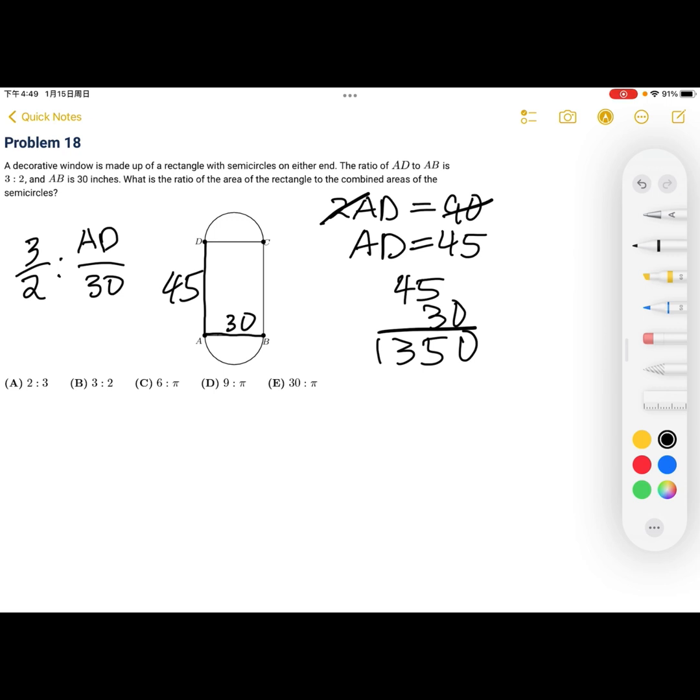And now, all we have to find is the combined areas of the semicircles, which is just a full circle. So, the radius, since the diameter is 30, it's 15. And that means the area of the circle is pi 125. And then, finally, it's asking for the area of the rectangle, the ratio of the area of the rectangle to the combined area of the semicircles,